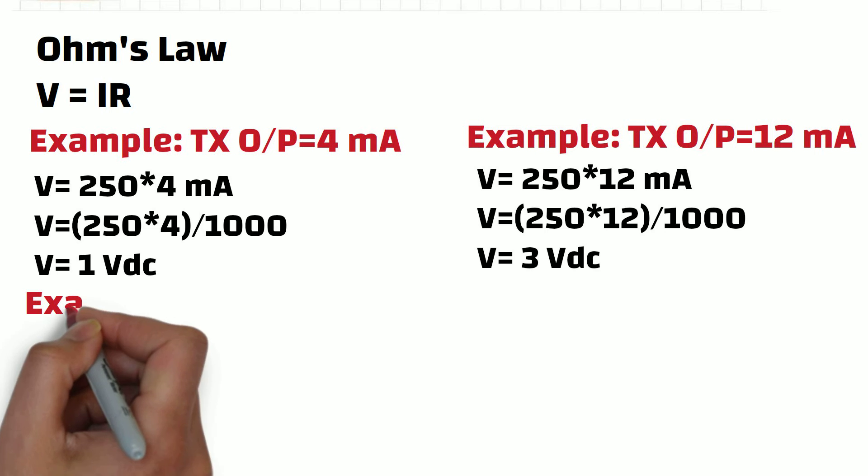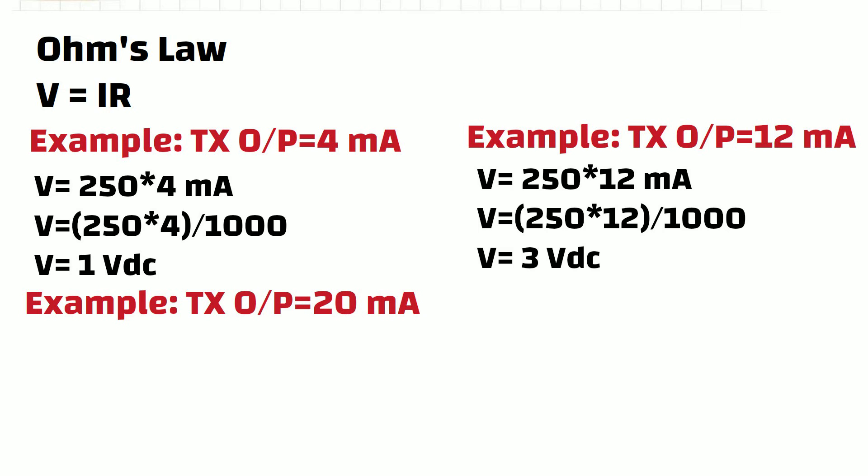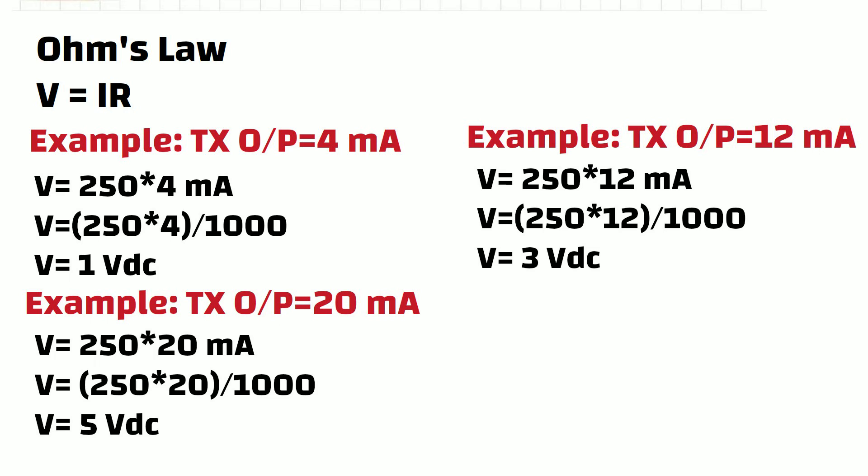Let's take one more example. Let's assume that transmitter's output is 20 mA. Now, put 20 mA and 250 ohm into equation, and do the simple math calculation. You will get 5 volt DC as a result.